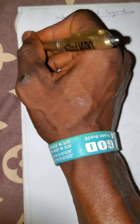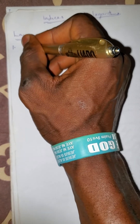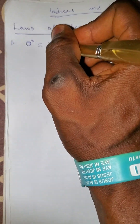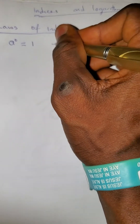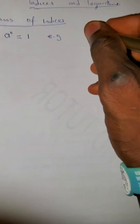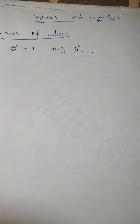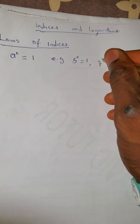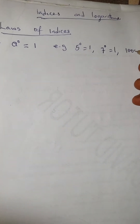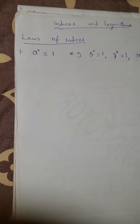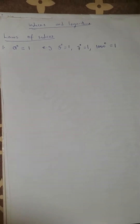The first law says, if you have any number raised to the power of zero, it equals 1. For example, 5 raised to the power of zero equals 1. 7 raised to the power of zero equals 1. 1,000 raised to the power of zero equals 1. So any number raised to zero equals 1.